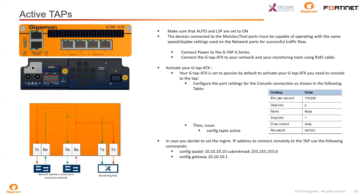Some active taps incorporate bypass or failover technologies to mitigate the power failure issue. Sophisticated models offer battery backup to extend usability during power failures. When the battery begins to die, some taps offer electromagnetic relays that physically close the link to allow traffic to continue — you won't have monitoring, but you also won't have traffic disruption. When that happens there is a renegotiation that takes place, so a few packets could be affected: TCP transmissions probably won't be noticeable, but UDP might be. As long as the drawbacks of power failure are fully understood, active taps provide excellent value and extend visibility to sectors of the network that would otherwise go unmonitored.